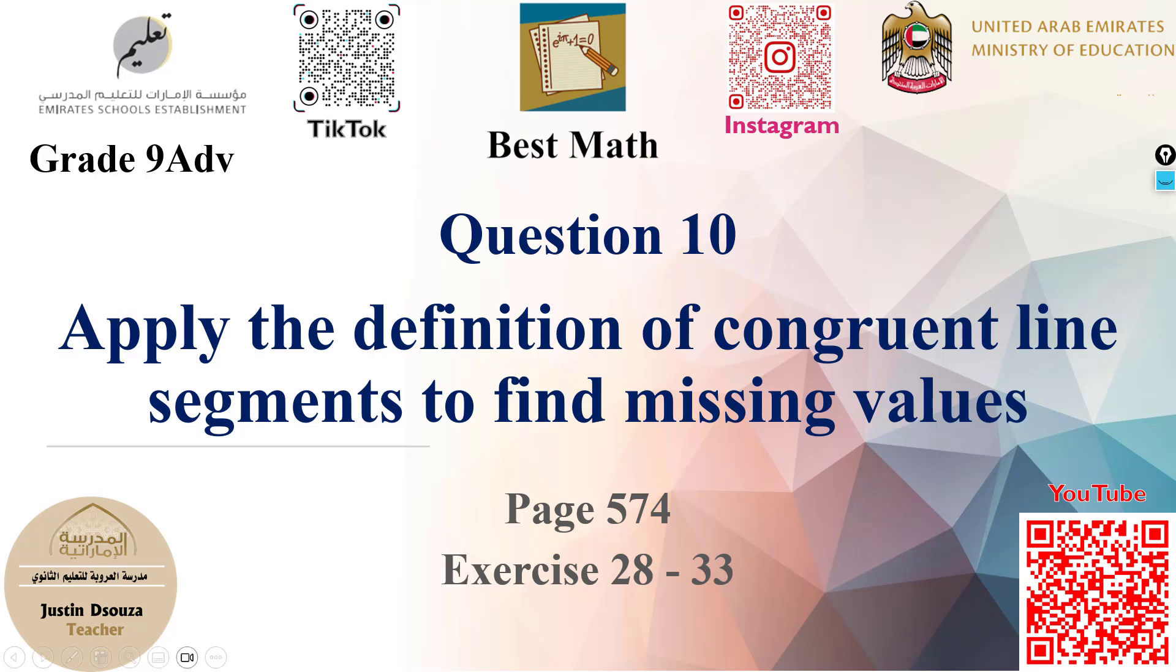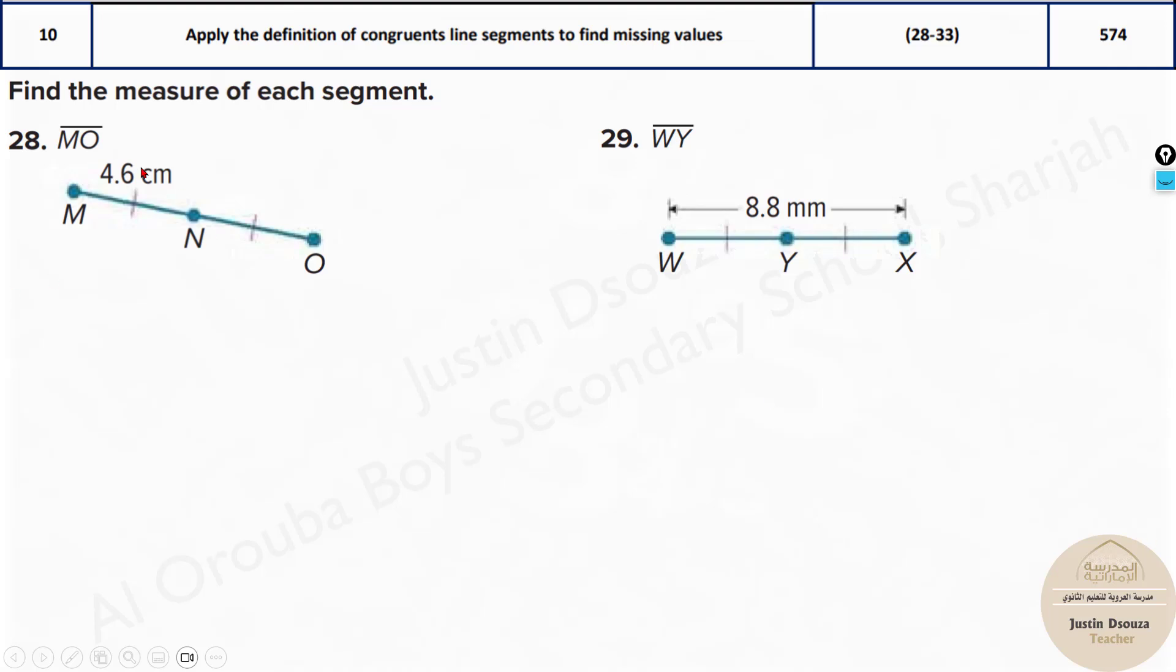In this video we will learn how to find the missing values in line segments. Here we have a line segment MO. The line MO is the entire line but it's split in between at MN and NO and it's congruent. Can you see this line?